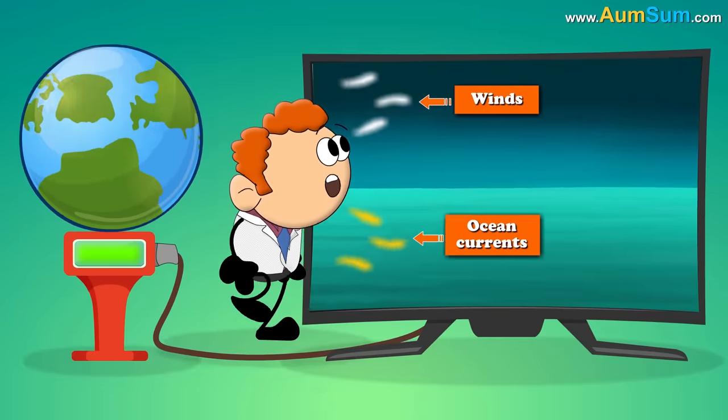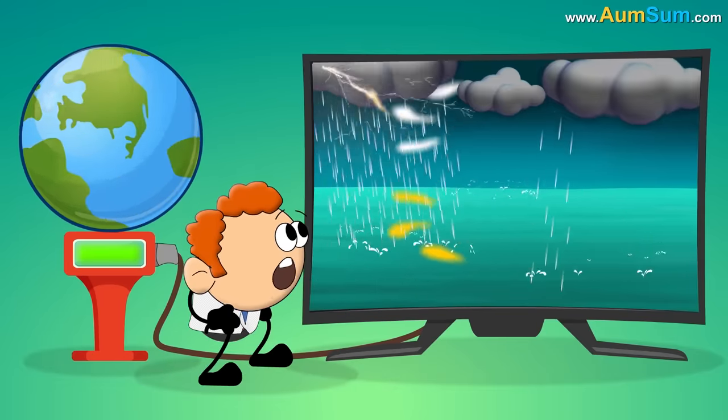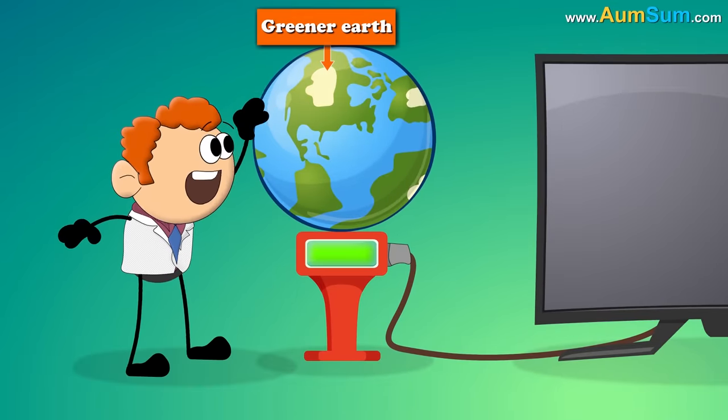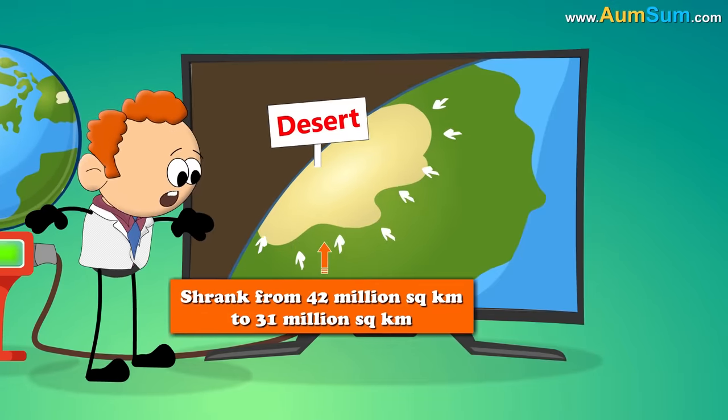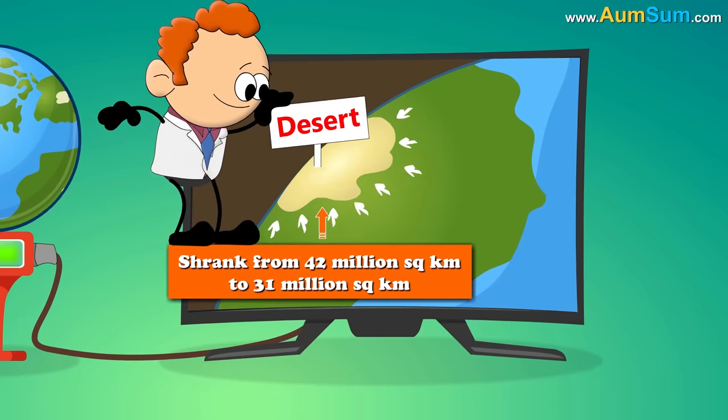In these simulations, the first noticeable change was that the direction of winds and ocean currents reversed, causing changes in climactic conditions. This resulted in a much greener Earth as the world's desert shrank from 42 million square kilometers to 31 million square kilometers.